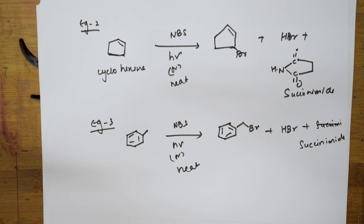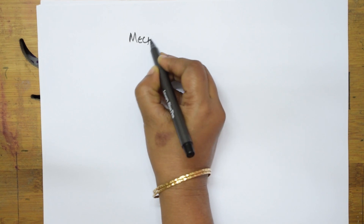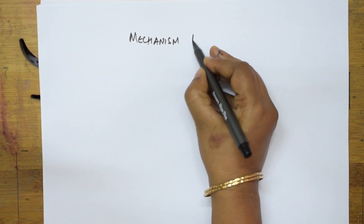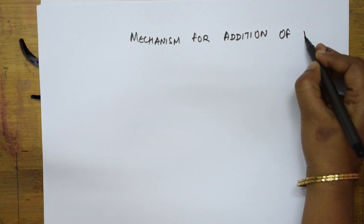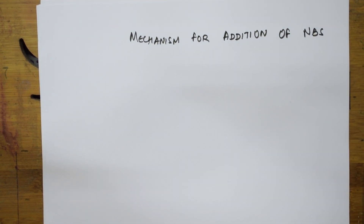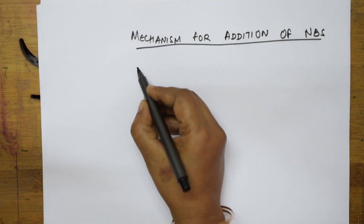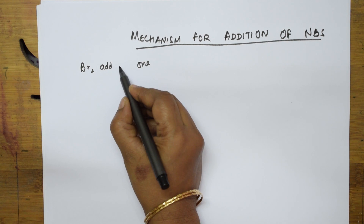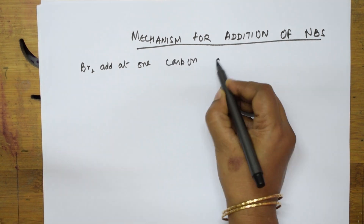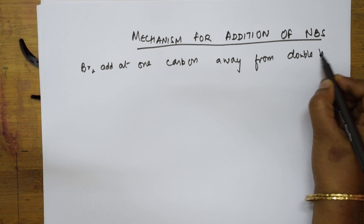Remember: you need to leave one bond from the double bond and then join the bromine. This is the key concept for NBS reactions. The mechanism for addition of NBS — N-bromosuccinamide — shows that bromine adds at one carbon away from the double bond. Always remember that.